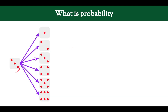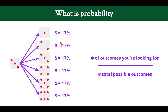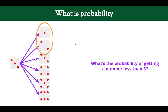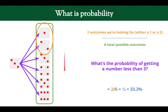Now let's look at dice. What is the probability of getting a three when you roll a die? We have one possibility of getting three out of six possible outcomes, so it's one out of six, or approximately 17%. Now let's look at a different one: what is the probability of getting a number less than three? That really means two options — getting a one or a two. There are two outcomes we're looking for out of six possible outcomes, so two over six equals one third, or a 33.3% chance of rolling a number less than three.